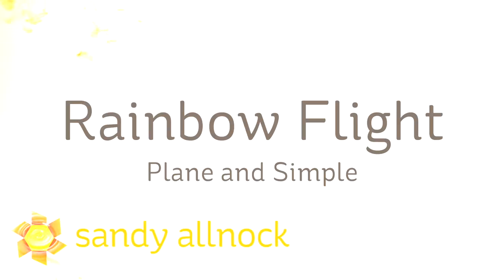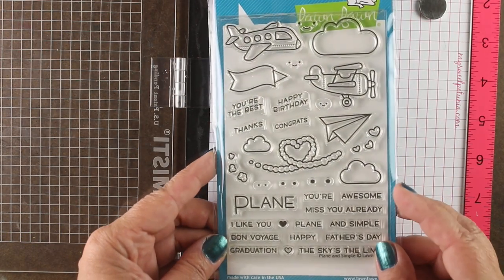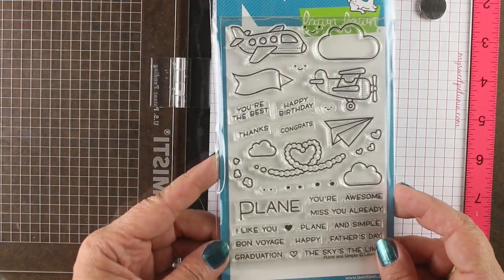Hi there, I'm Sandy Alnach, artist and paper crafter here on YouTube, and today I'm going to use the Plain and Simple stamp set from Lawn Fawn to create a rainbow flight across a card. It's similar to something I did with a shark on Instagram recently, but I'm going to do it with the plane instead.